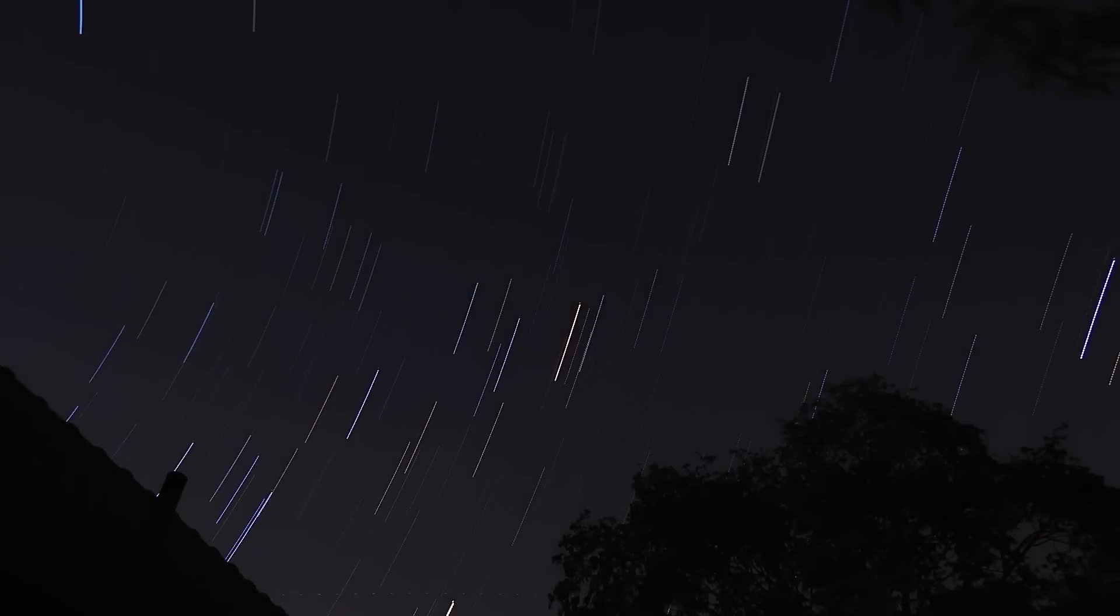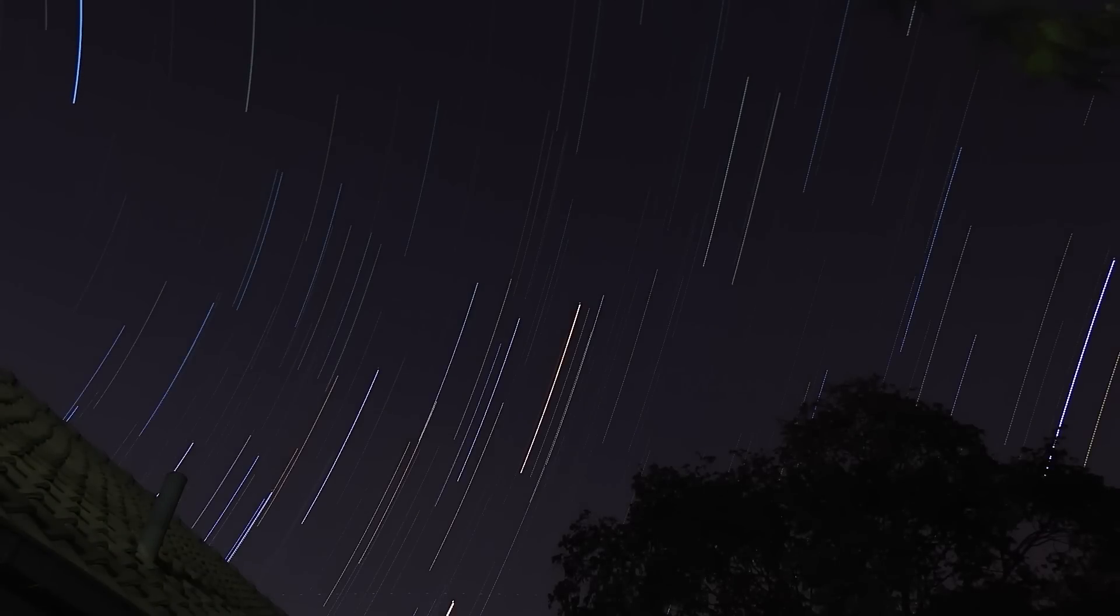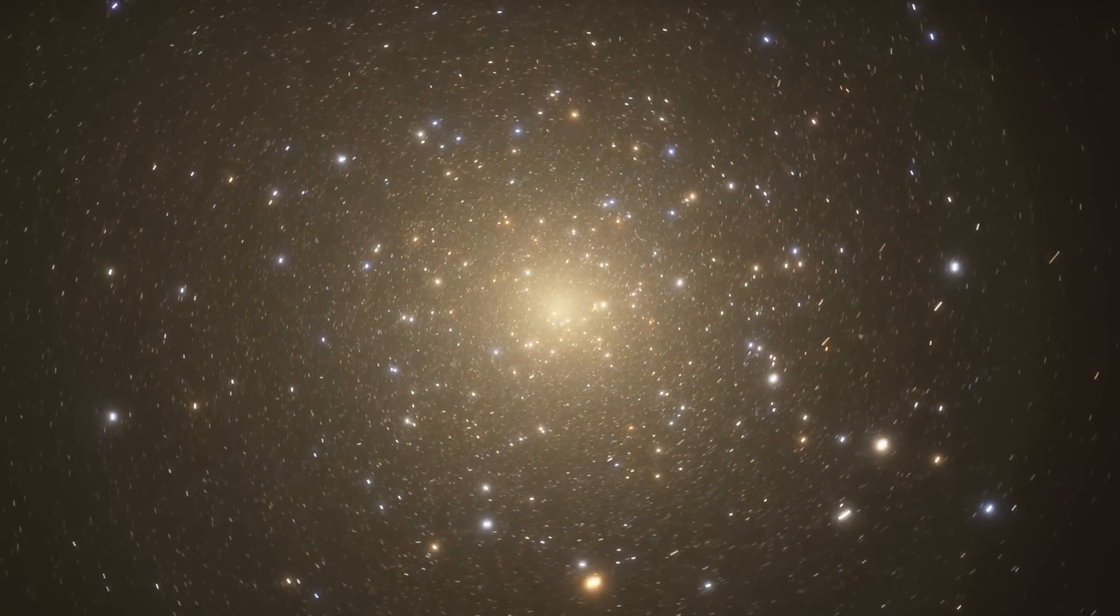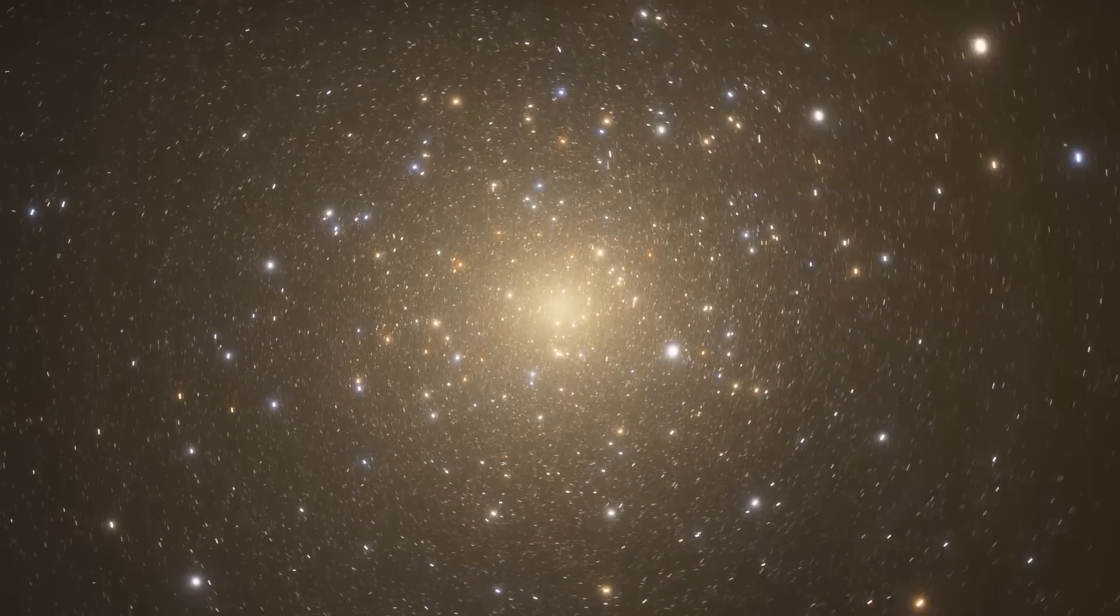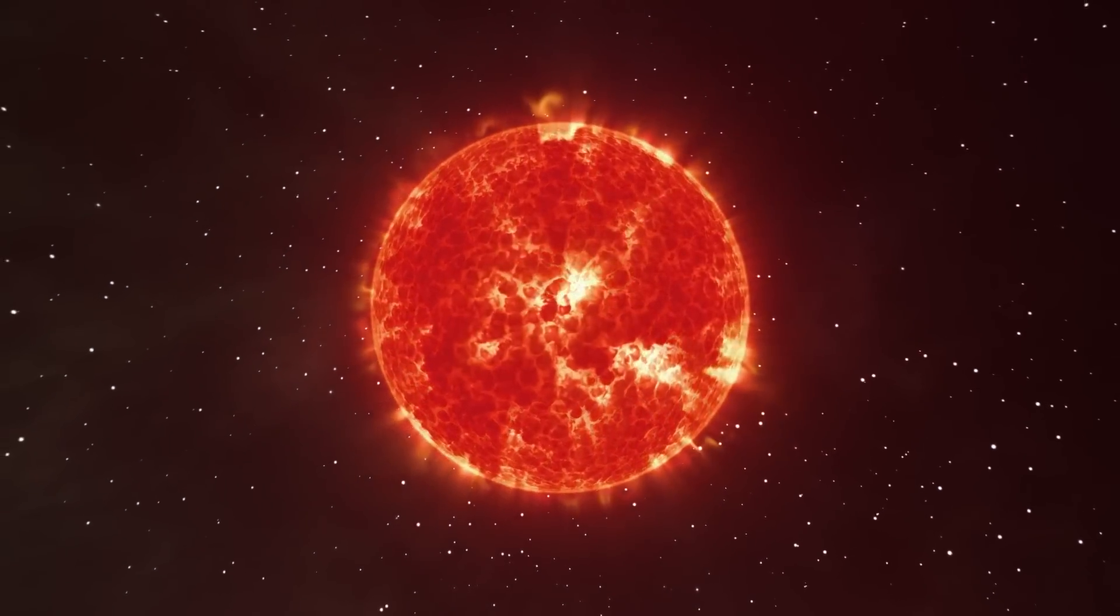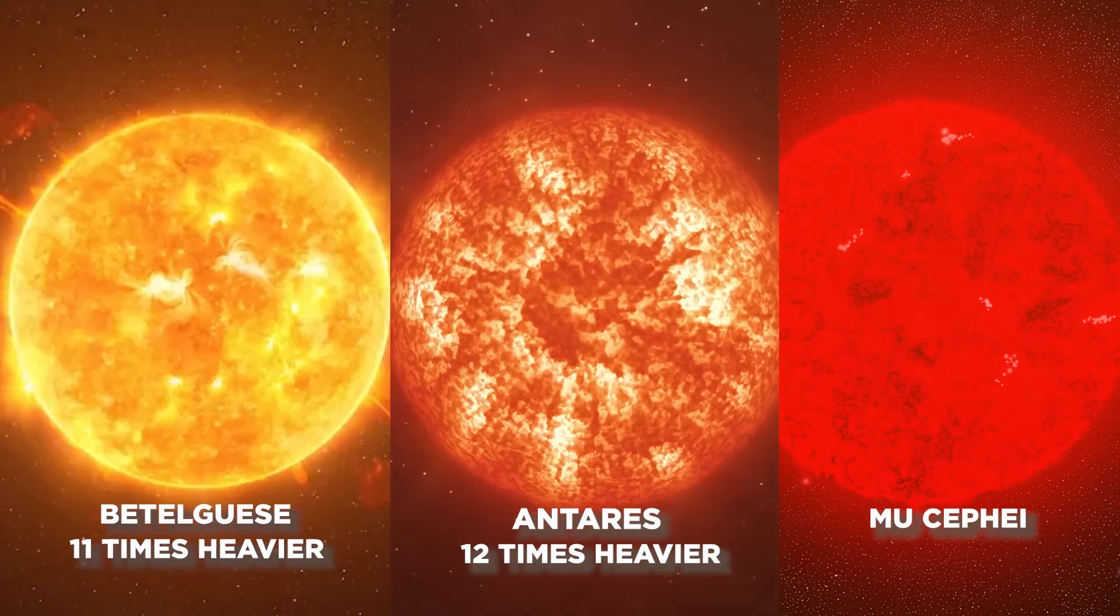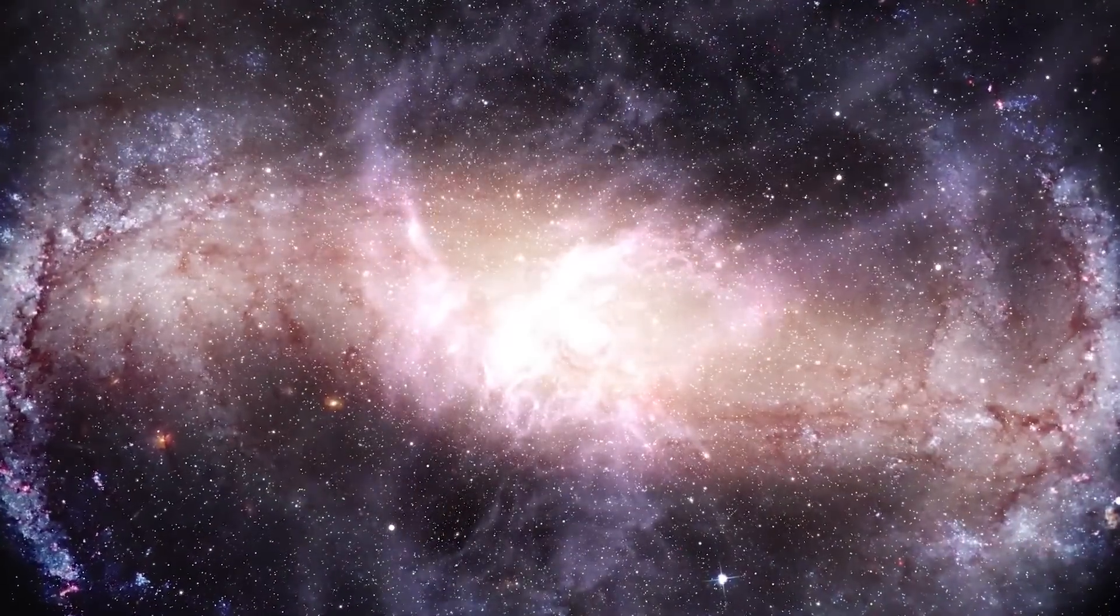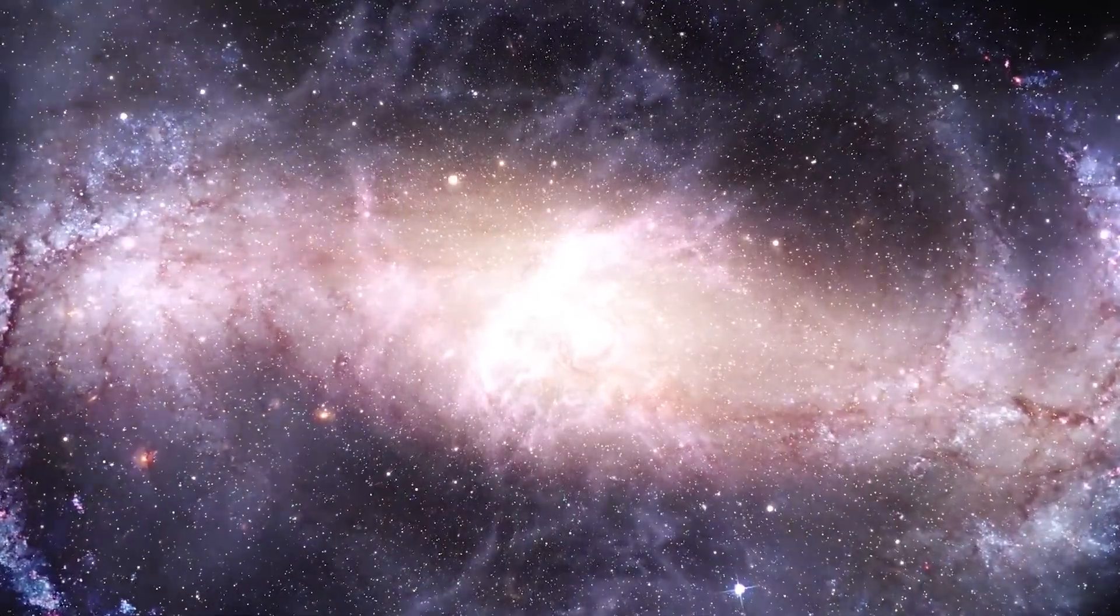The stars are also not all the same mass. Based on estimates, Betelgeuse is about 11 times as heavy as the sun, and Antares is about 12 times as heavy. This means that the two stars are about the same size and brightness. Mucefei, on the other hand, is much heavier than the sun. Its mass is thought to be about 20 times that of the sun. Finally, each star has its own set of traits and ways of acting.